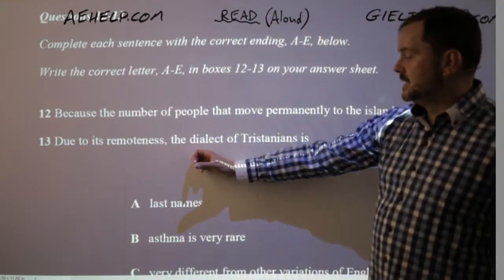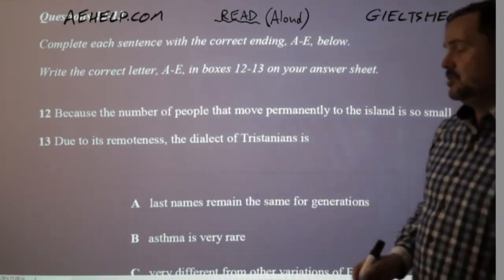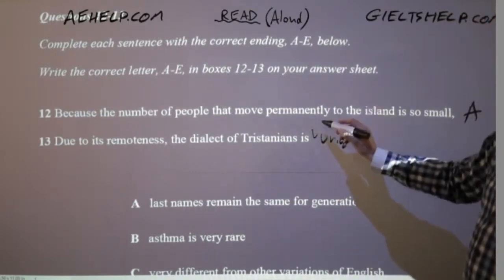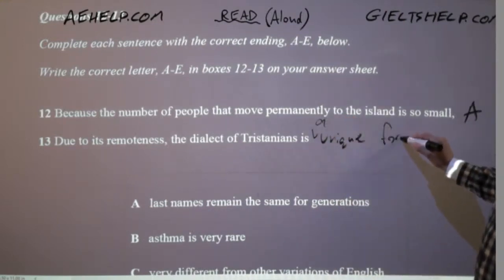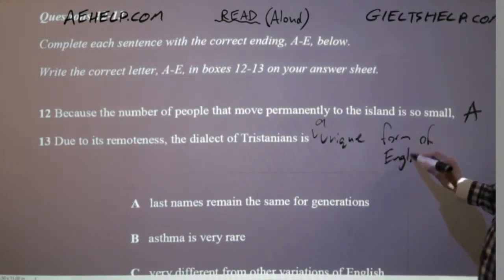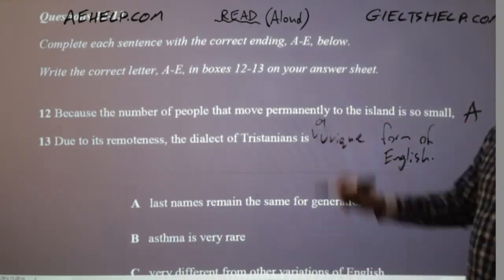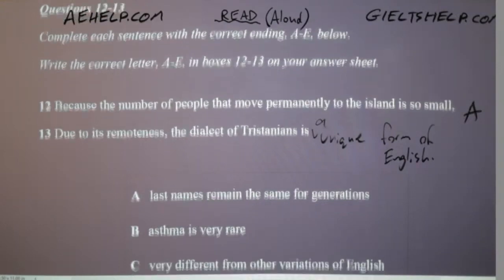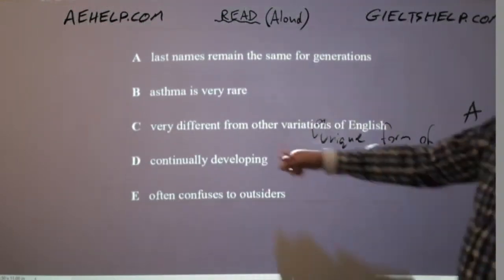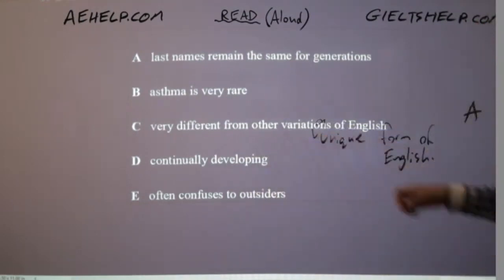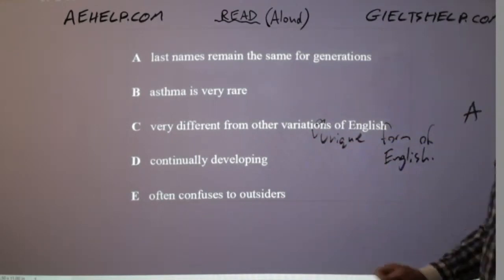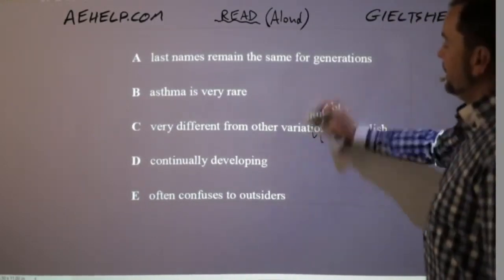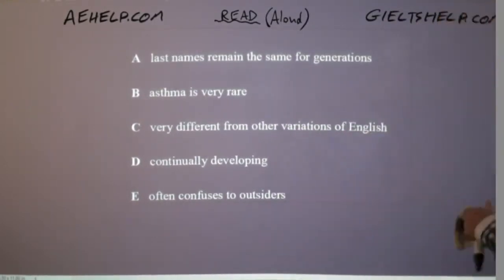Question 13: 'due to its remoteness, the dialect of Tristanians is...' — if I had to finish this sentence myself I would say 'unique' or 'a unique form of English.' Looking at the choices: 'very different from other variations of English' — that's the same as saying a unique form of English. So that's the correct answer. It's paraphrasing. The trick with this type of question is: think about the answer first on your own, then find the correct match.